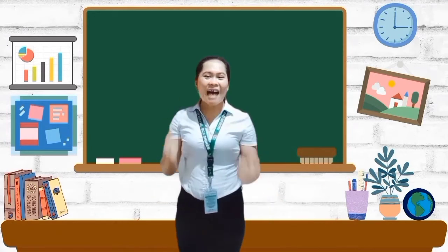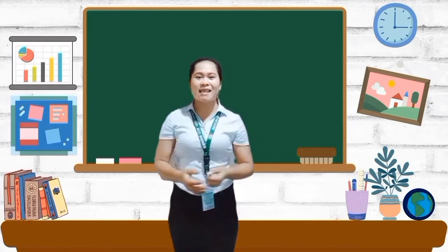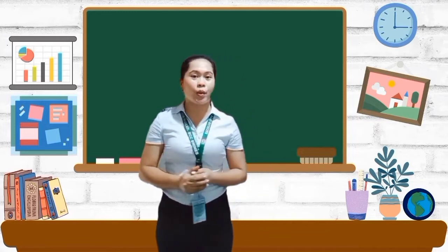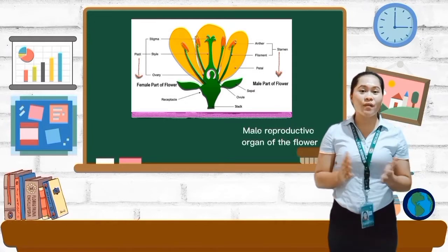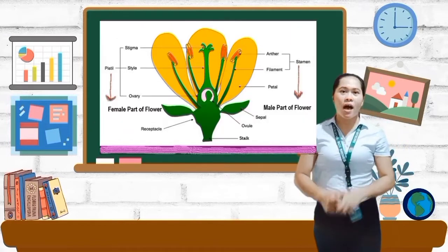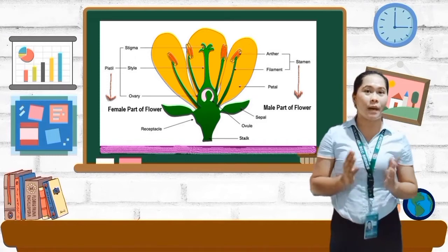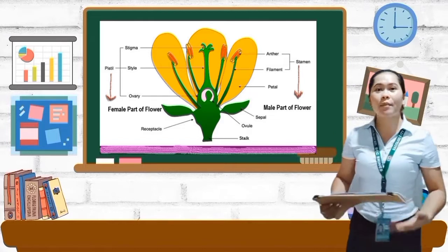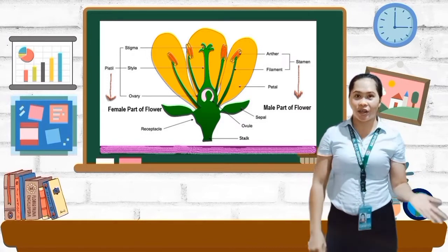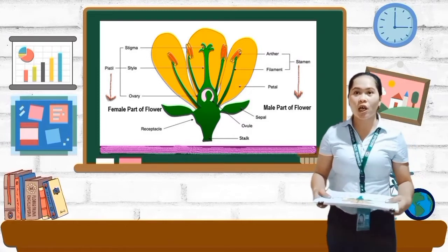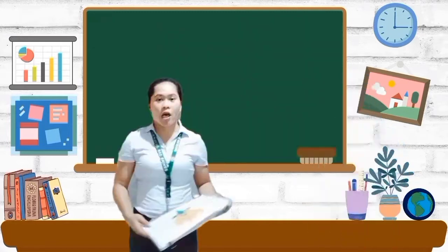Now let's proceed to our main discussion. But before that class, please fix yourself, fix your chairs, and I will encourage everyone to please get your science notebook and title notes because afterwards we have a short quiz. So this time, we are going to discuss about the male reproductive organ of the flower and the female reproductive organ of a flower. There are plants that reproduce using an accessory part of a flower — it is where the reproductive organ of the plant is located: the stamen and the pistil.